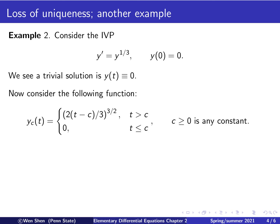Now, let's consider the following function. We call it yc because it carries a parameter c. For t less than c, the function is zero. And for t bigger than c, the function is 2 times t minus c divided by 3 to the power 3 over 2. And here c bigger than 0 is any constant.